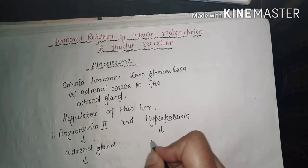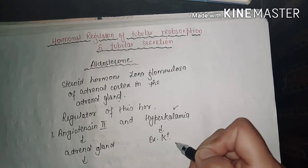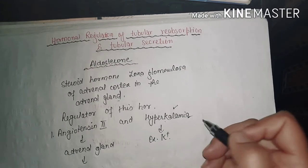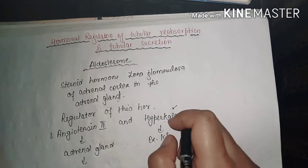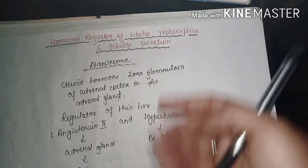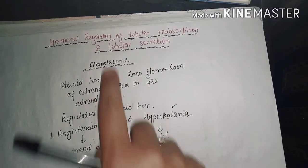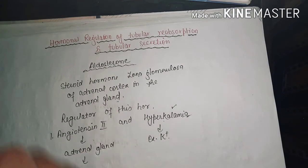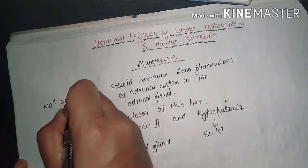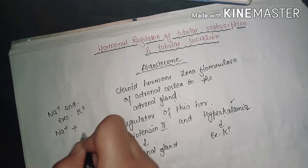Hyperkalemia is the condition when the body has an excessive amount of potassium. This excessive amount of potassium regulates the production of this hormone. The main function of aldosterone is that it is essential for the reabsorption of sodium and excretion of potassium. Sodium is reabsorbed along with water.